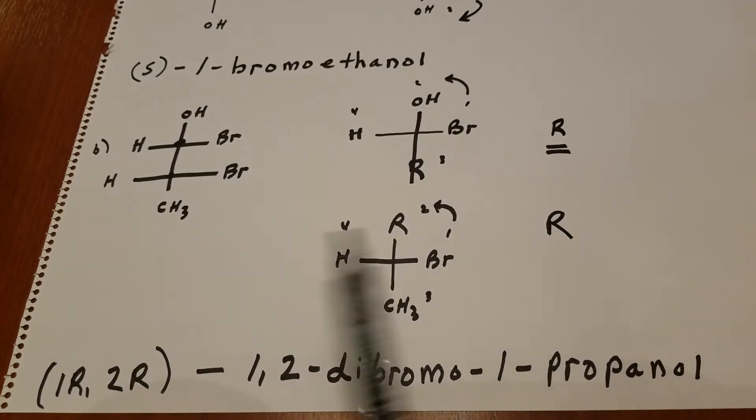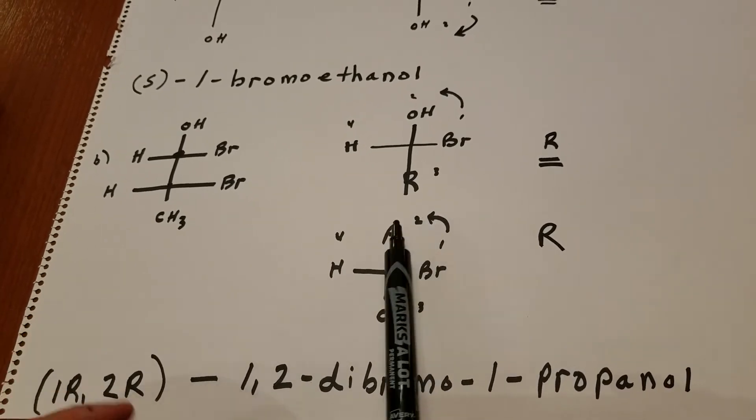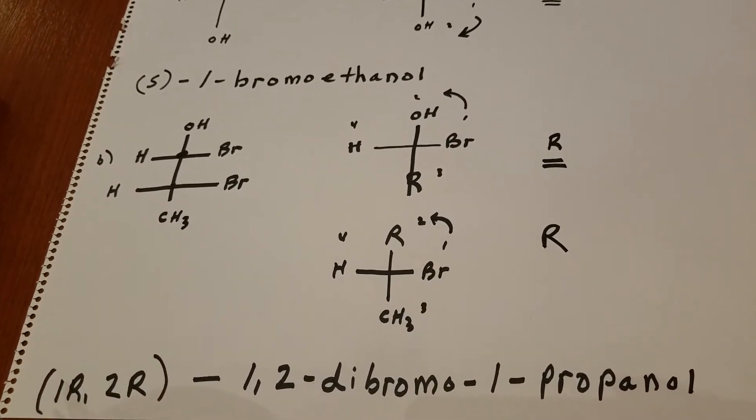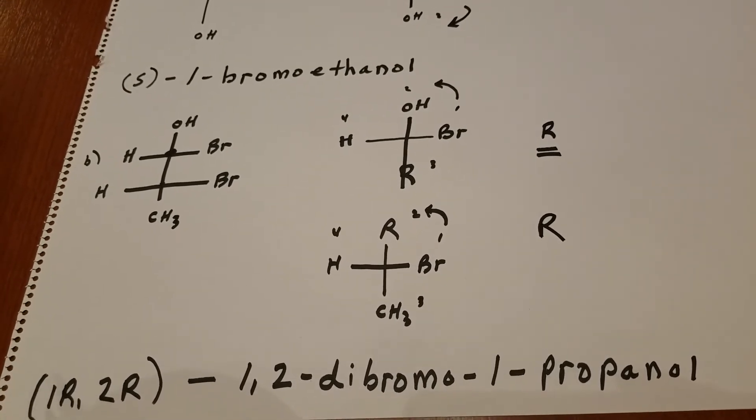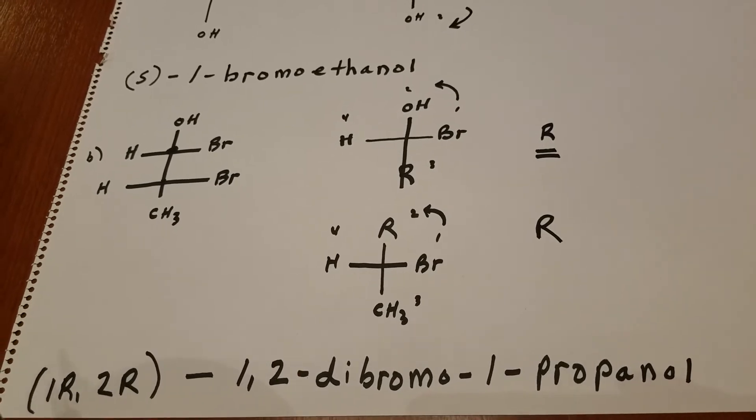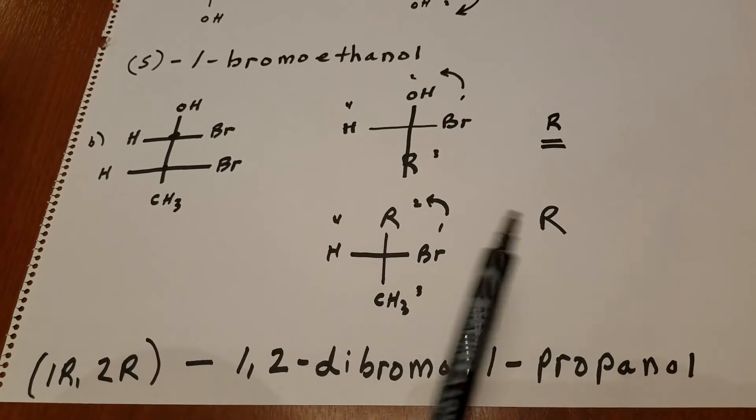So as you can see, assigning the priorities, bromine is one. The R group, which is a carbon bonded to a bromine, that's going to be number two. Methyl is three. There's that group number four, again on the horizontal. So we're going to be switching our thoughts. Instead of an S, it's an R.